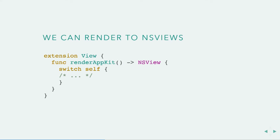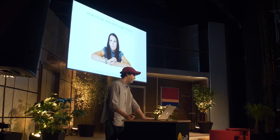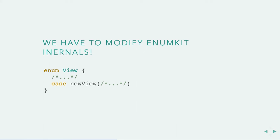The really cool thing is nothing stops us from adding another method — we can render to an NSView, just switch on self and handle all the cases. The compiler will enforce that we do this, which is great. But we run into a problem: how do we add a new view type, like our map view in the first example? Well, the obvious way is to reach into EnumKit — remember, this is like UIKit, we don't reach into UIKit and change anything — we'd have to reach into EnumKit and add a new case, and that is kind of bad.